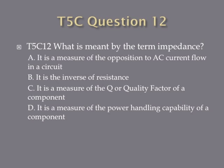Question twelve: What is meant by the term impedance? A. It is a measure of the opposition to AC current flow in a circuit. B. It is the inverse of resistance. C. It is the measure of the Q or quality factor of a component. Or D. It is the measure of the power handling capability of a component.